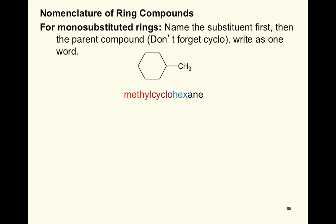Nomenclature of ring compounds: for monosubstituted rings, name the substituent first, then the parent name including cyclo, all as one word. No number is needed for a monosubstituted ring because all positions are equivalent — for example, a six-membered ring with a methyl group is methylcyclohexane. Build the model to convince yourself that the numbering system isn't required when clarification isn't needed.